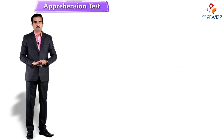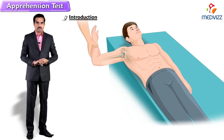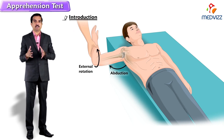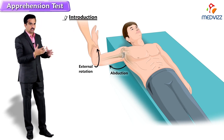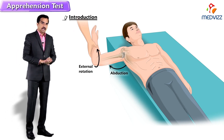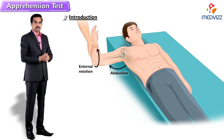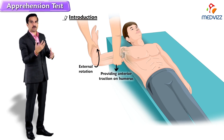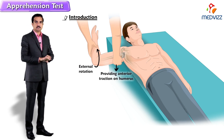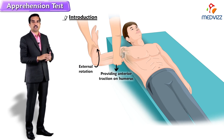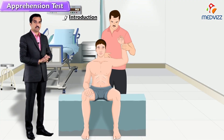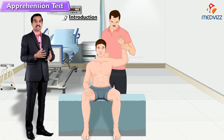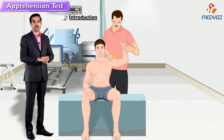Apprehension test. In this test, the arm is abducted and placed in an externally rotated position, as you can see on the screen. The right arm of the examiner is providing anterior traction on the humerus, pulling the posterior part of the humeral head forward. The same test can be done from the back with the patient sitting up and the examiner pushing forward on the posterior head of the humerus.